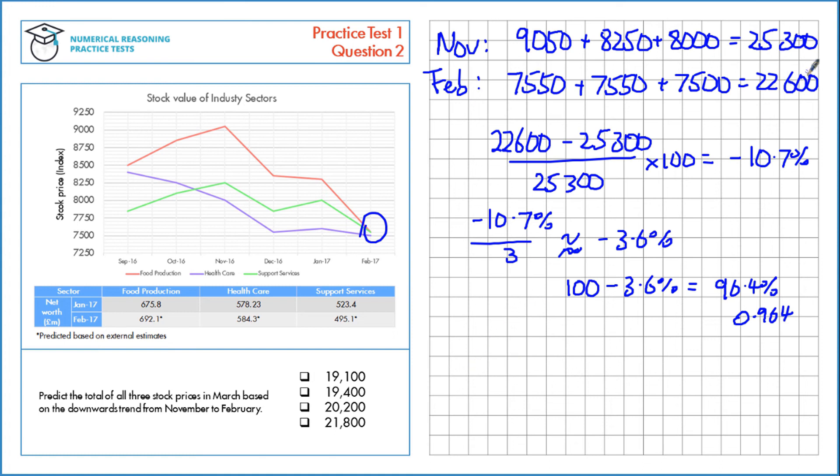So this is the February figure. If we want an estimate for March, we can multiply by this decrease, 0.964 times the February figures.